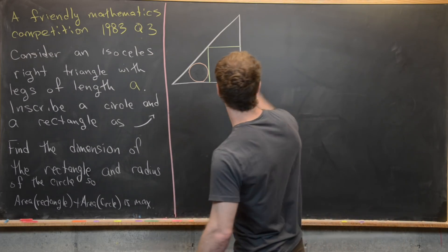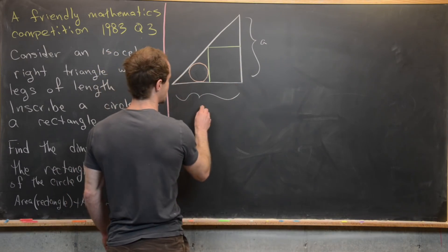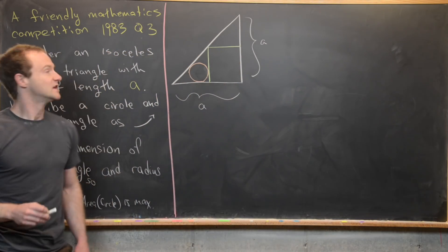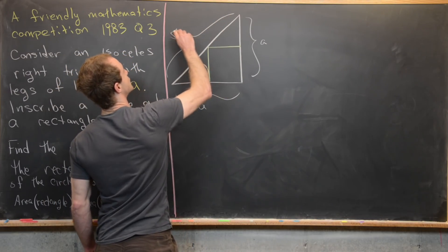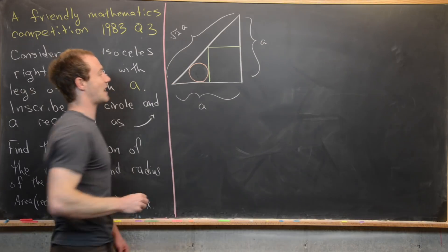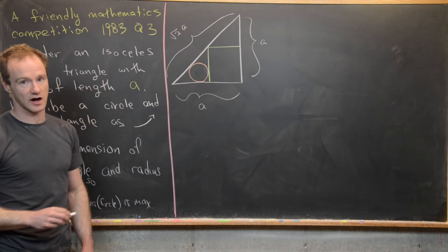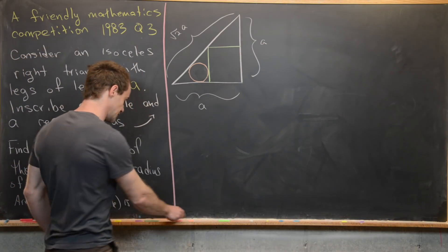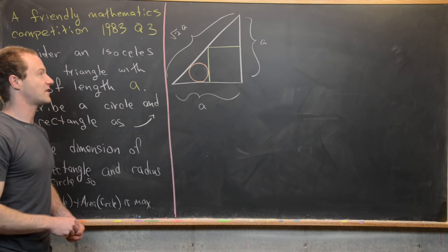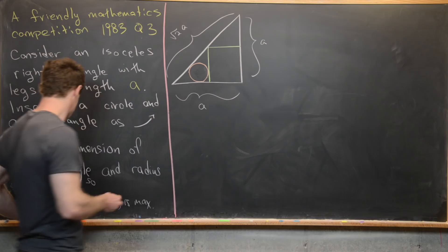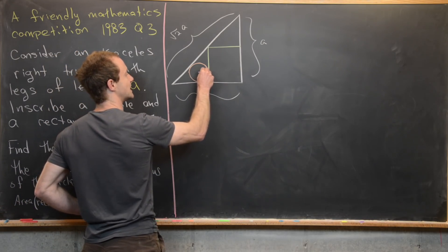As the problem says, this length here is A and this length here is also A. Notice that's going to make this length here equal to the square root of 2 times A by the Pythagorean Theorem, given that this is an isosceles right triangle. Now the next thing I want to do is assign a value to the length and width of the rectangle and the radius of the circle. Let's say that the radius of this circle is R.